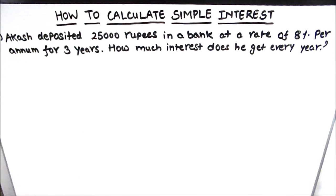So let us solve an example here to calculate simple interest. The question says Arash deposited 25,000 rupees in a bank at a rate of 8% per annum for 3 years. How much interest does he get every year?